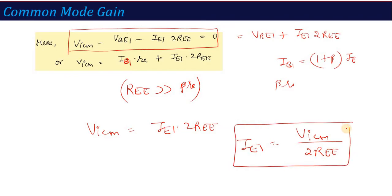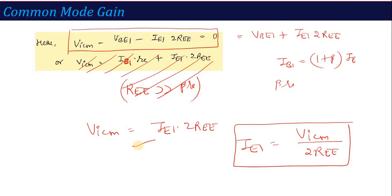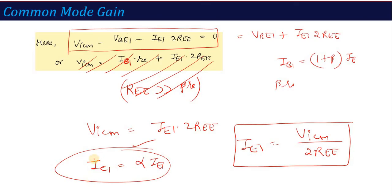So ultimately IE1 equals VICM divided by 2REE. Now the collector current IC1 equals alpha into IE1, which equals alpha into VICM divided by 2REE.